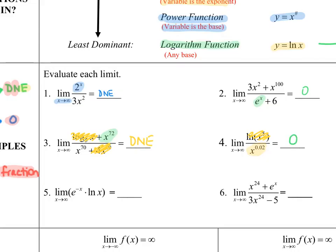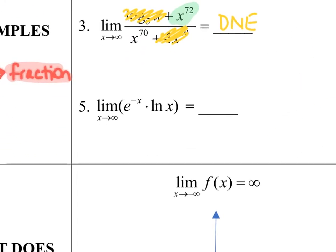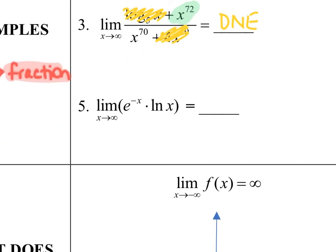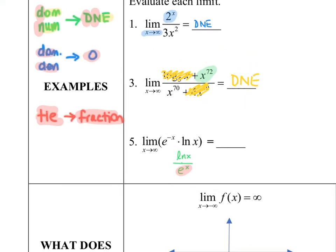Question five is a little tricky because I have e to the negative x. I'm going to apply the negative exponent and think of this as the natural log of x over e to the x. When I write it in that form, I can see that my dominant term is in the denominator — a dominant denominator — which means zero is my answer for this one.